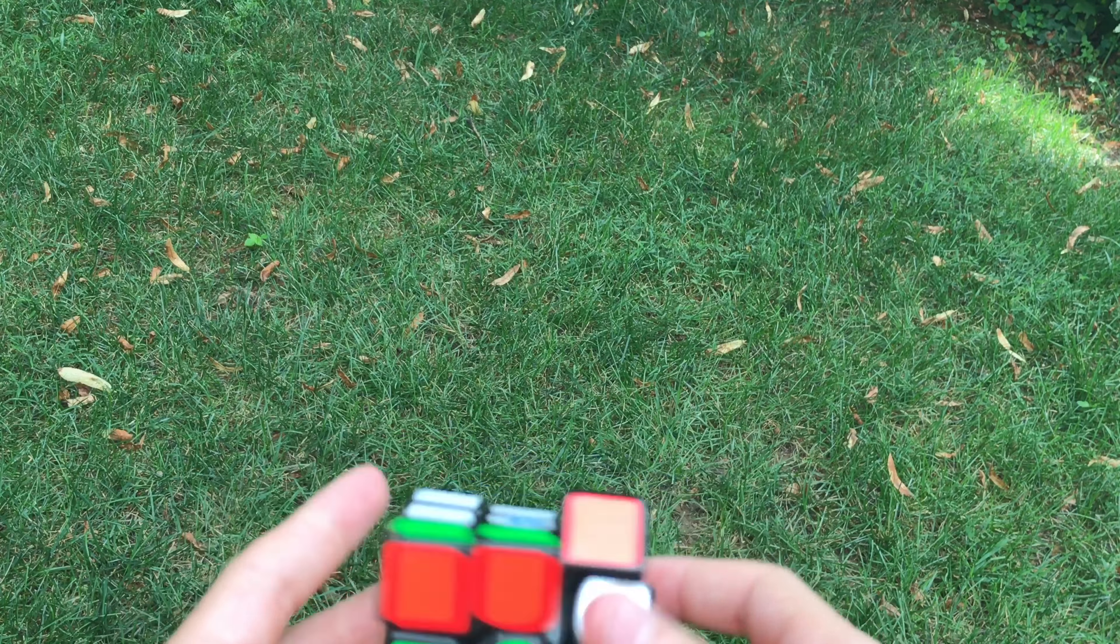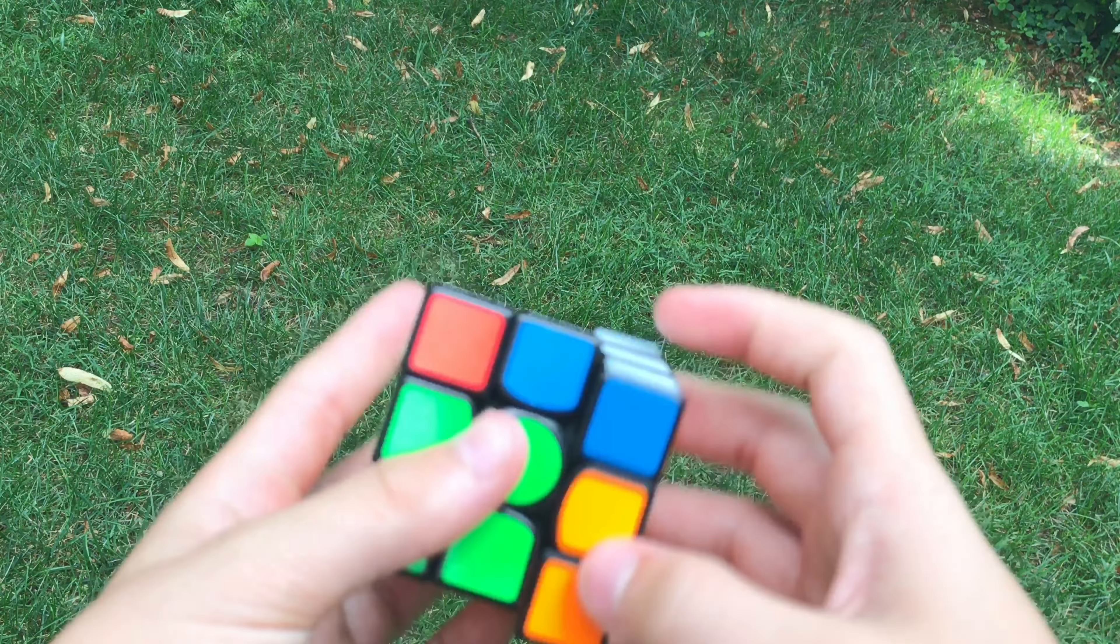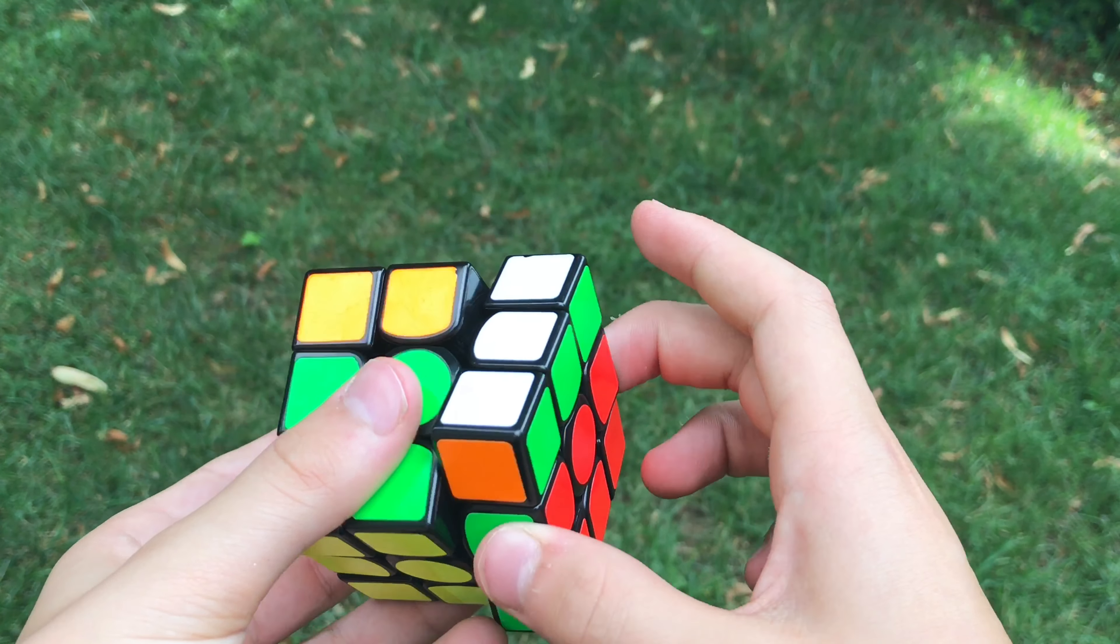Hello everybody, and in this video we're going to be reviewing the Gans Air UM. The price on this cube is $47.37 off the cubicle.us, in reminiscence of Felix Zemdeg's 4.737 world record single.